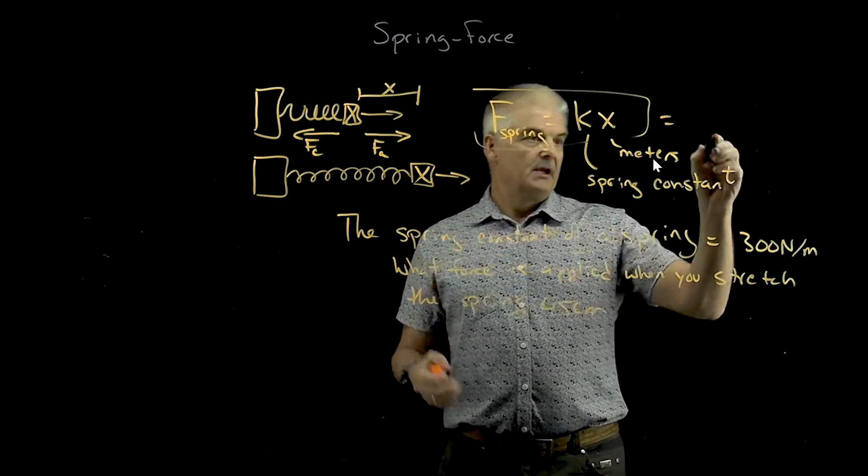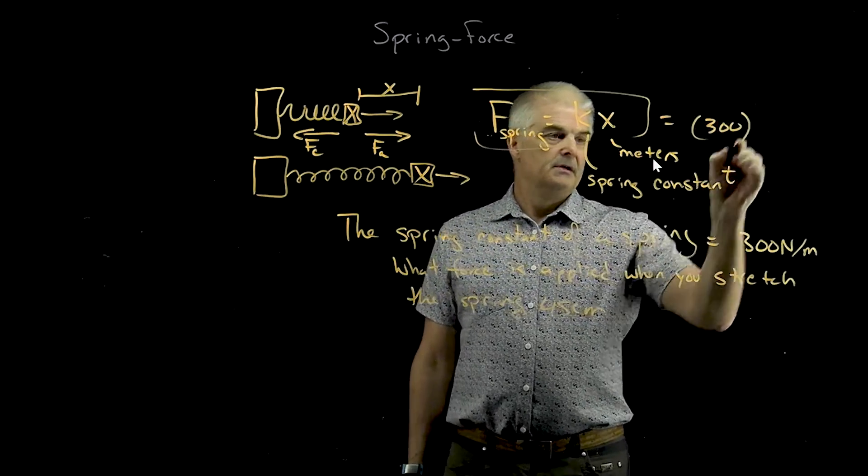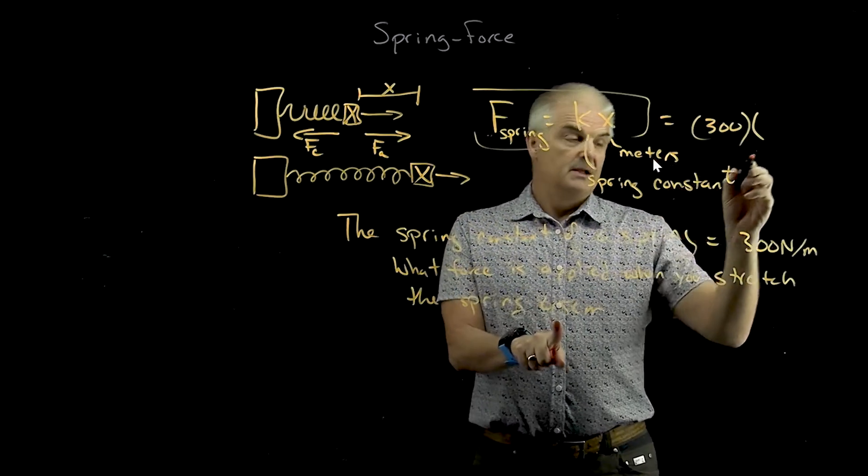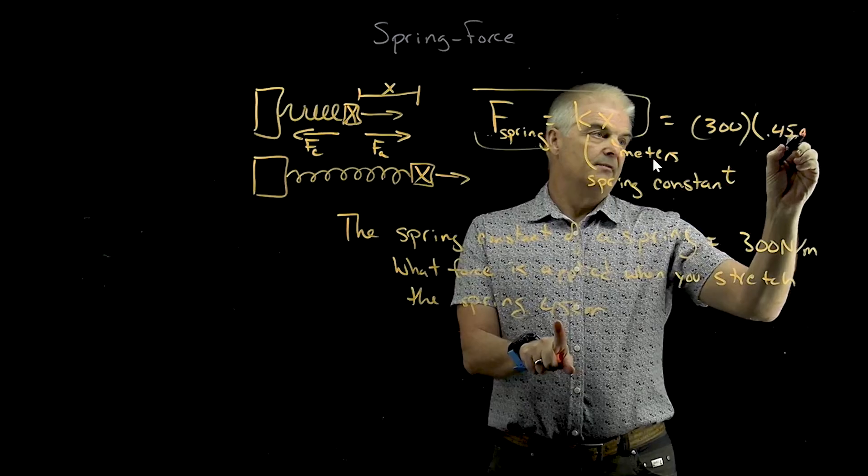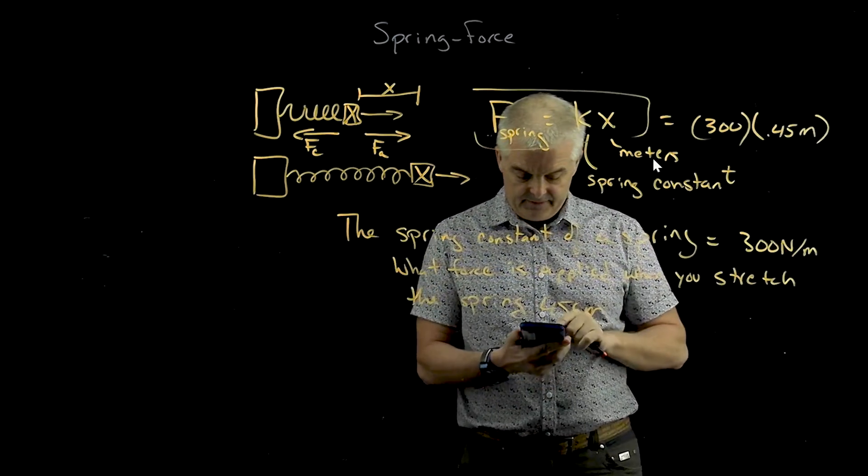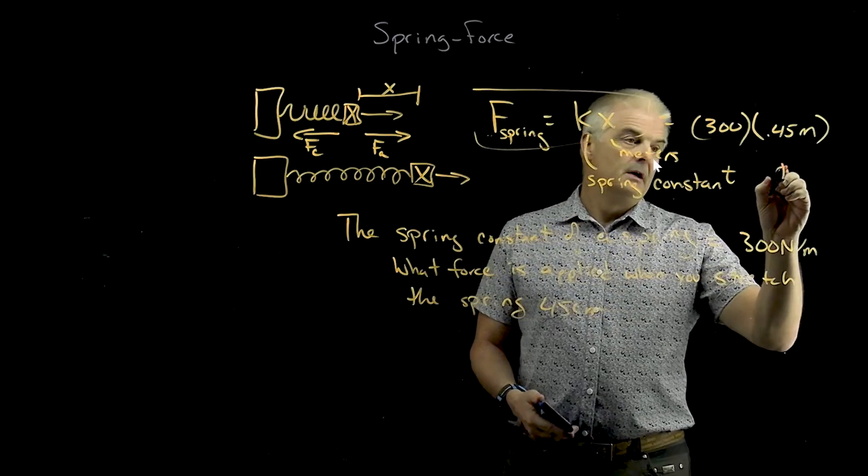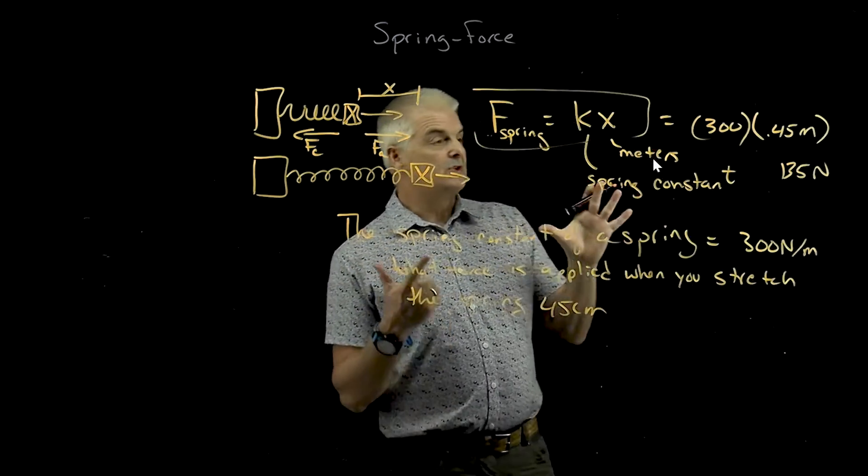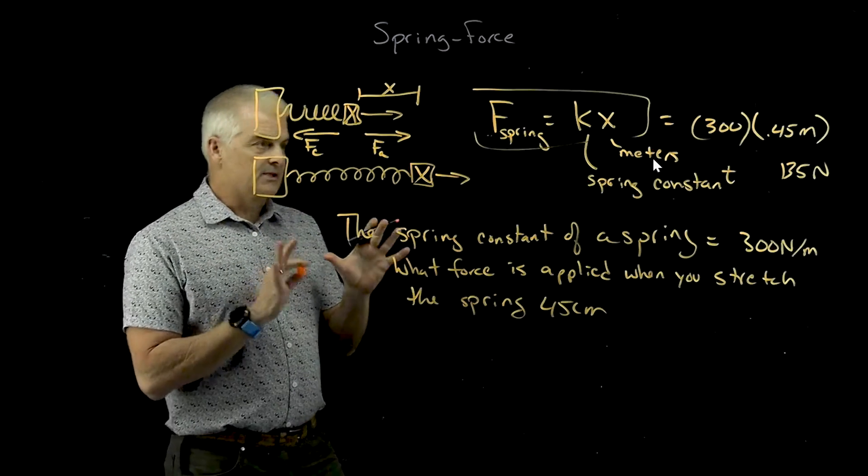You would just say F equals 300 times—now, this isn't centimeters, it has to be in meters. Watch that. That would be 0.45 meters. So you take 300 times 0.45, and you get 135 newtons. It's that simple. So these questions are at some level easy, but of course we could make it more complex because force is also equal to mass times acceleration, and that's